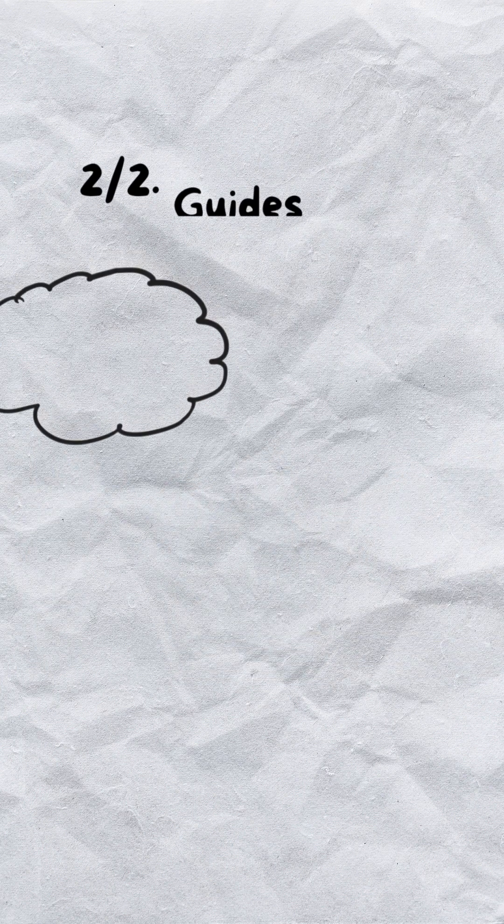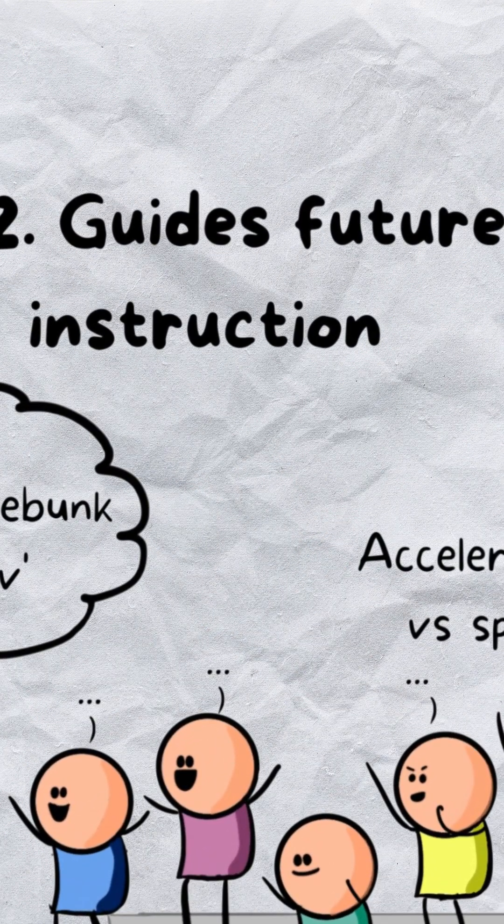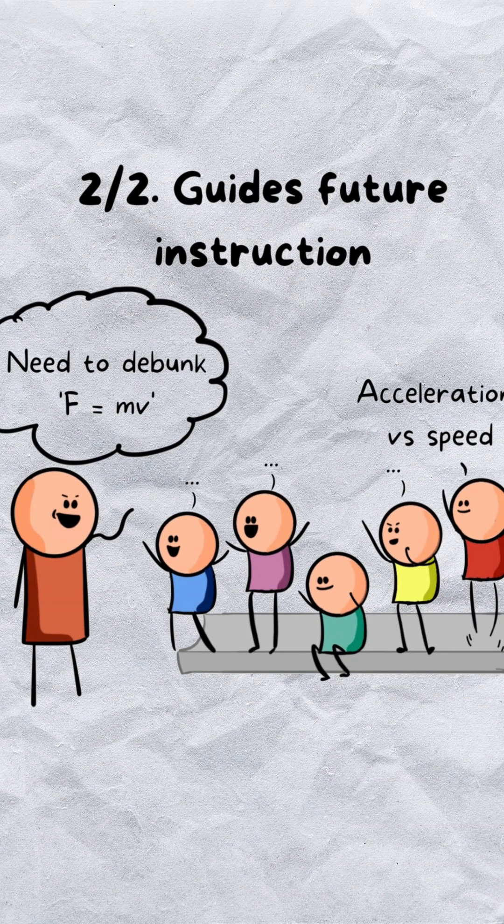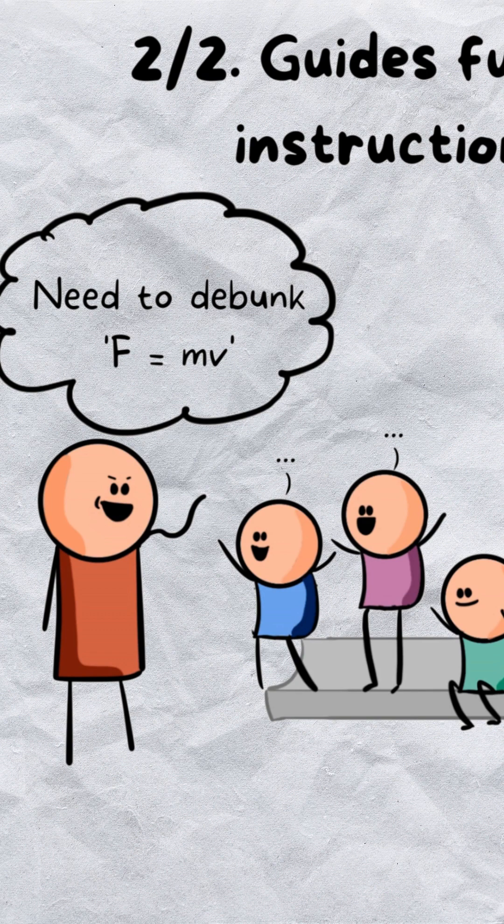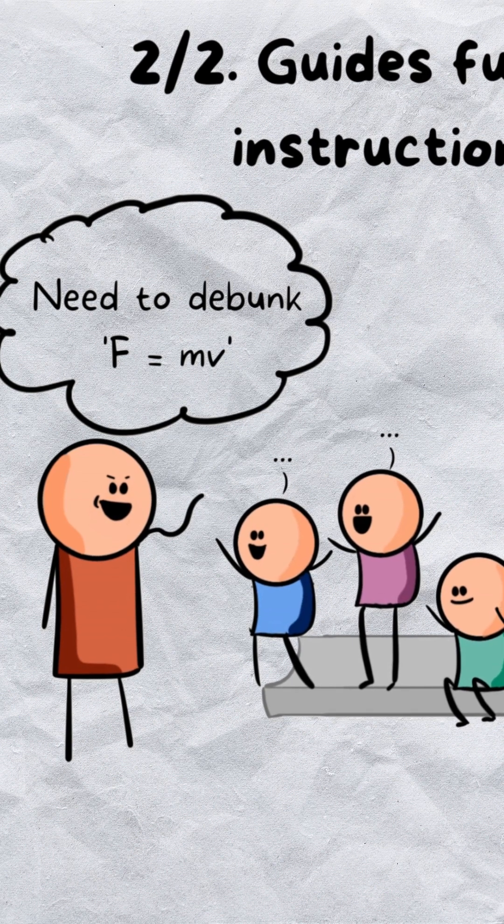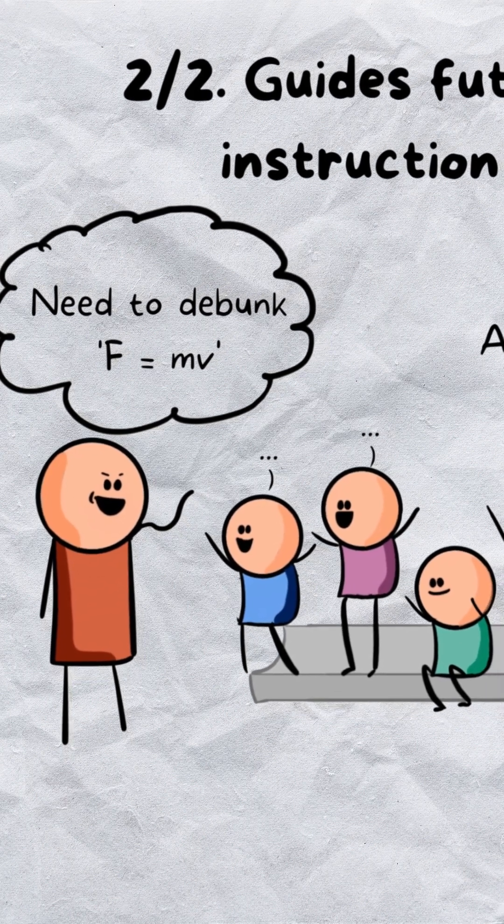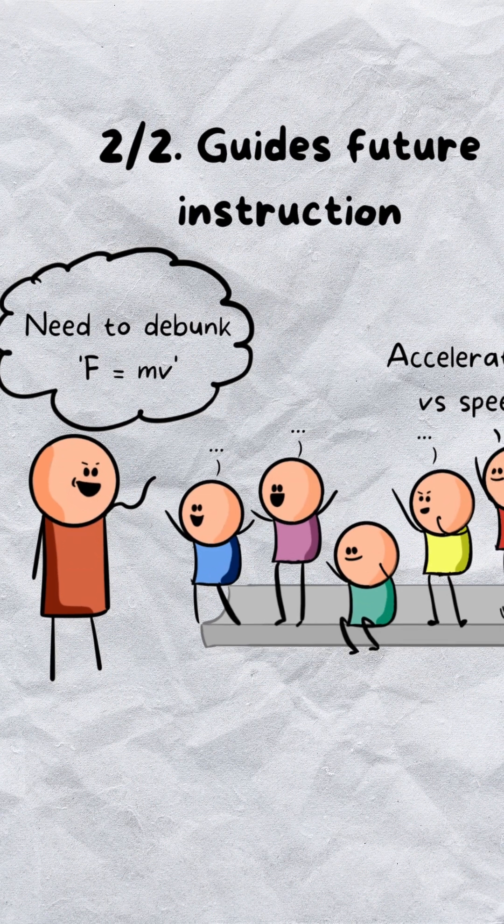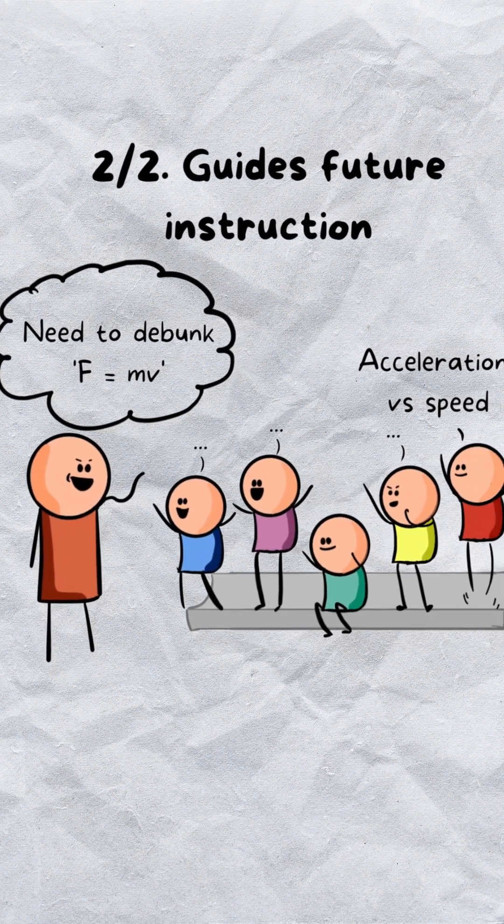But second, more importantly, the discussion will guide your future instruction. In this case, the teacher might think: I need to debug this F equals MV misconception. It's coming up a lot. This also means no two classrooms are the same. Your lesson plans will be customized to how your students are thinking. Isn't that amazing?